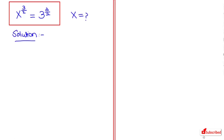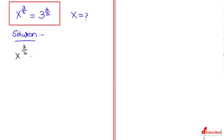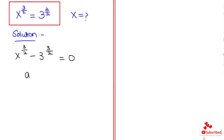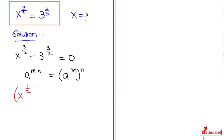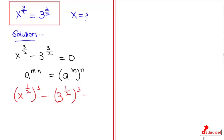In the first step I am going to take 3 to the power of 3 over 2 to the left hand side. Now here I am going to use the natural rule that is a to the power of m times n is equal to a to the power of m and a to the power of n. So applying this here, it will turn to x to the power of 1 over 2 whole to the power of 3 minus 3 to the power of 1 over 2 whole to the power of 3 is equal to 0.